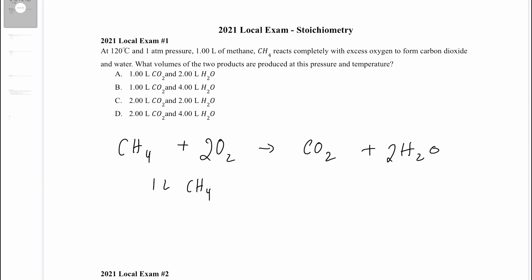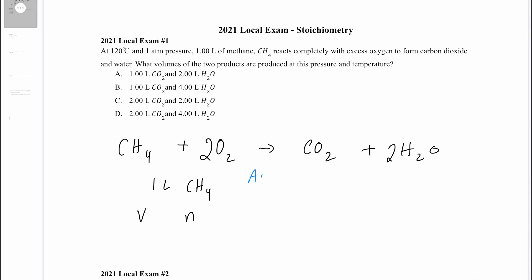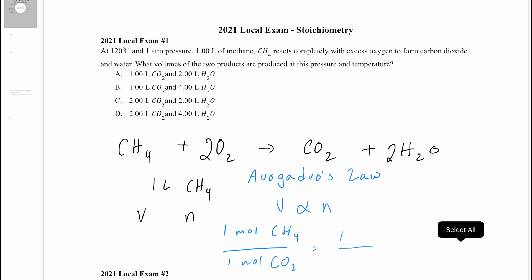All of the other conditions — temperature and pressure — are staying the same. So the only thing that's really changing is volume and the number of moles. We have a really useful relationship known as Avogadro's law, which says that volume is proportional to the number of moles of a gas. Since we have one mole of CH4 for every one mole of CO2, that means for every one liter of CH4 we have one liter of CO2. And since water and methane are in a two-to-one ratio, we're going to have two liters of water. So we have one liter of carbon dioxide and two liters of water — that is answer choice A.